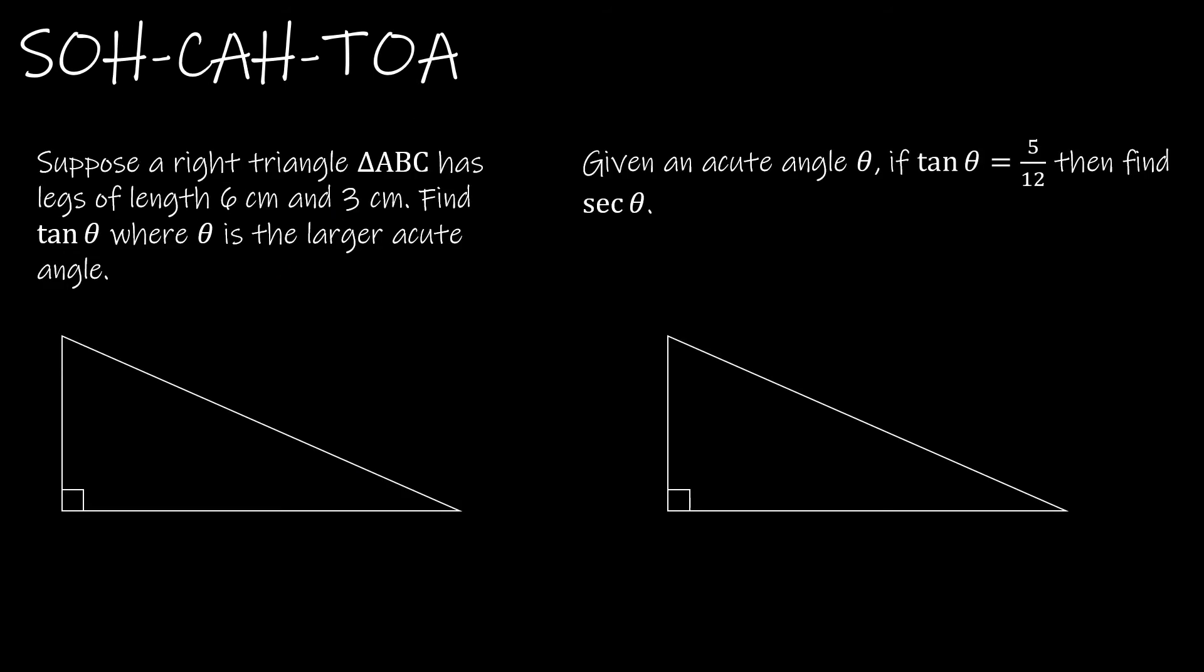Here are two practices for us to look at. You can certainly do these on your own first, or you can look at them with me. Suppose a right triangle has legs of length 6 centimeters and 3 centimeters. I'm going to put the 6 on the longer side and 3 on the shorter side. Because it says legs, I know it's the two that create the right angle and not the hypotenuse. If I need to find tangent of theta, that's very easy.